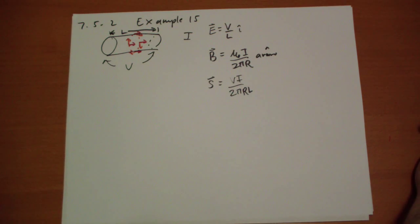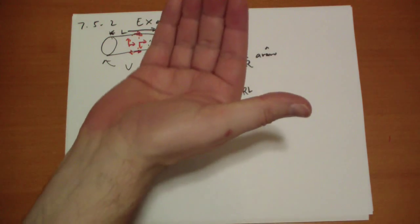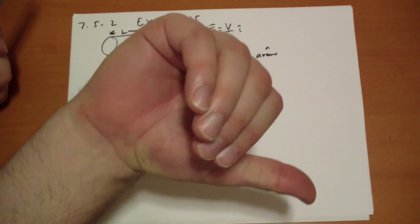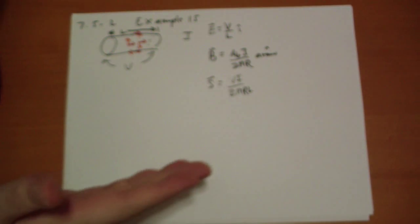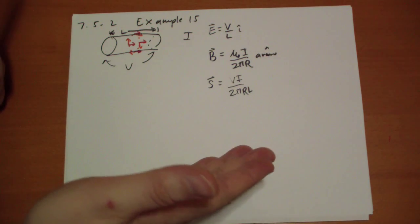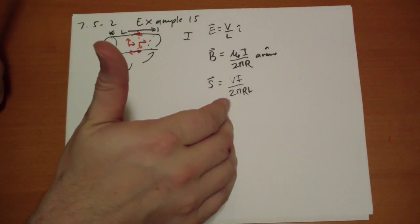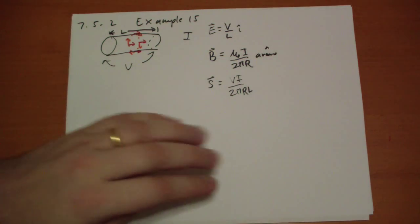And its direction is E cross B, so we take our right hand in the E direction, and we curl it. So it's pointing inside, E down, it's pointing inside. So we start with E, we curl it this way, it's pointing inside.